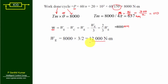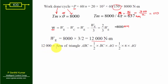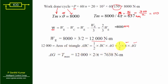We calculate W_e to find T_max. Since W_e represents the area of triangle ABC, W_e equals (1/2)·BC·AG, where BC equals π and AG is the height (T_max). So 12000 equals (1/2)·π·AG, giving AG equals 12000 × 2 divided by π equals 7638 Newton meters. Therefore T_max equals 7638 whereas T_mean equals 637 Newton meters.